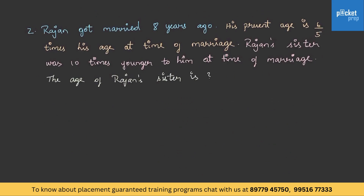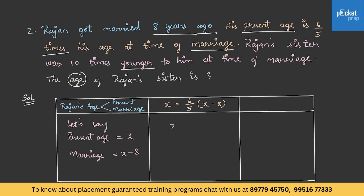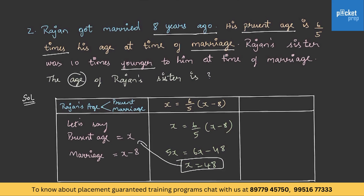Let's solve another problem. Rajan got married 8 years ago. His present age is 6 by 5 times his age at time of marriage. Rajan's sister was 10 years younger to him at time of marriage. The age of Rajan's sister is? Let Rajan's present age be x, so his age at marriage is x minus 8. Given x equals 6 by 5 times (x minus 8). On cross multiplication, 5x equals 6x minus 48, so x equals 48. His age at marriage was 40.